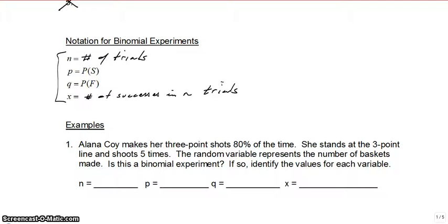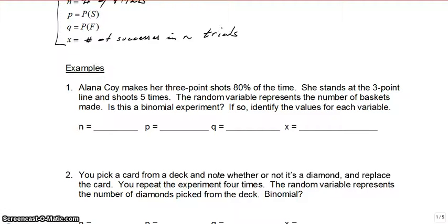Let's go through this first example together. What you're going to have to do is first determine if it is a binomial experiment — does it hold those four characteristics? If it's not, you don't need to answer the N, P, Q, X. But if it is, you should be able to identify those values.